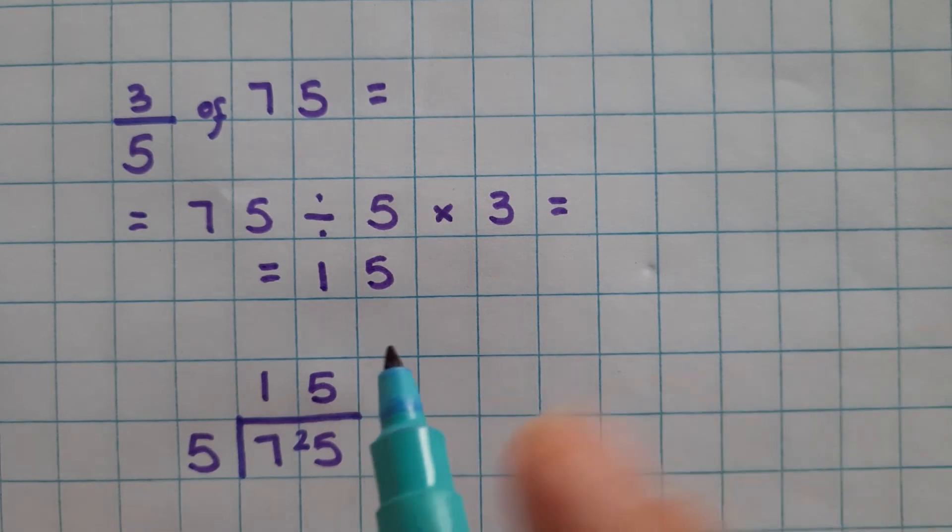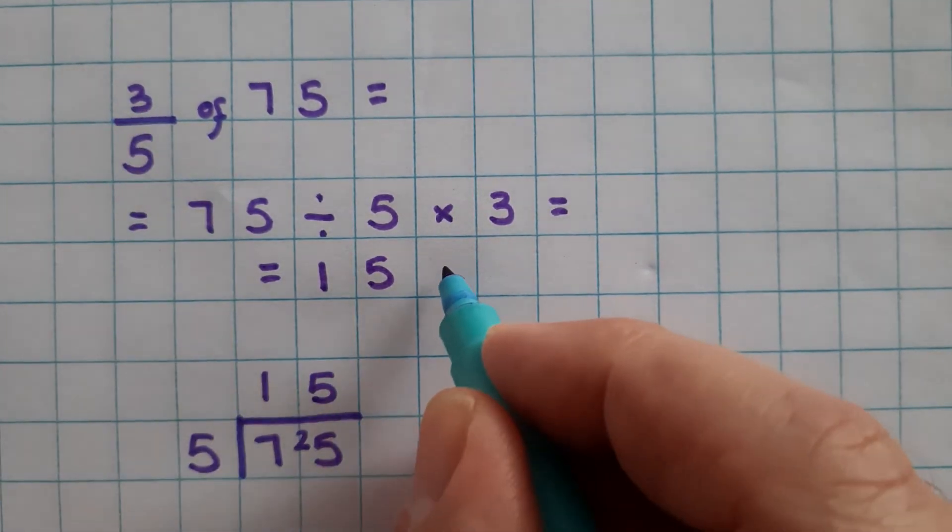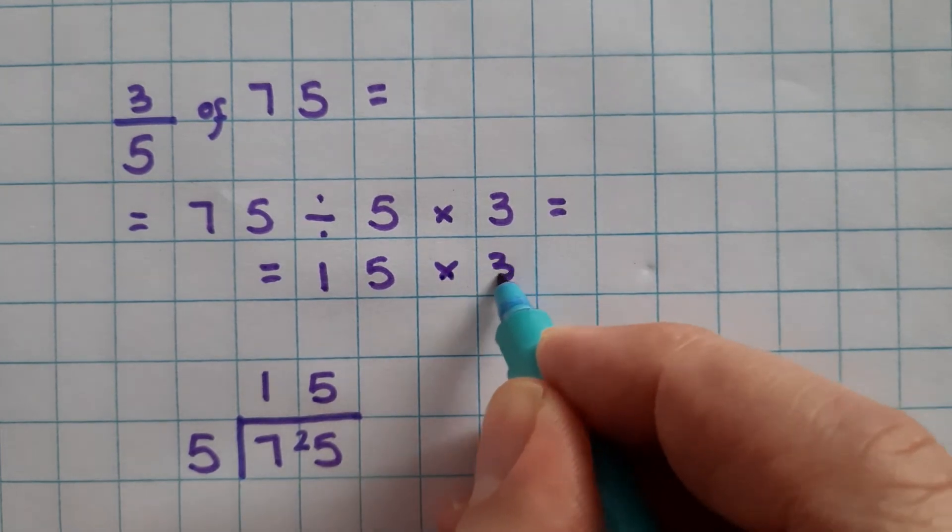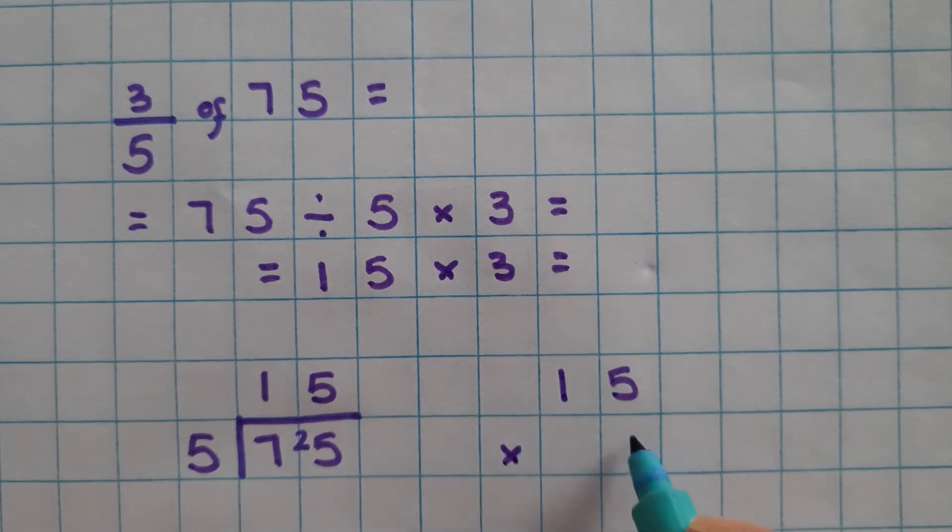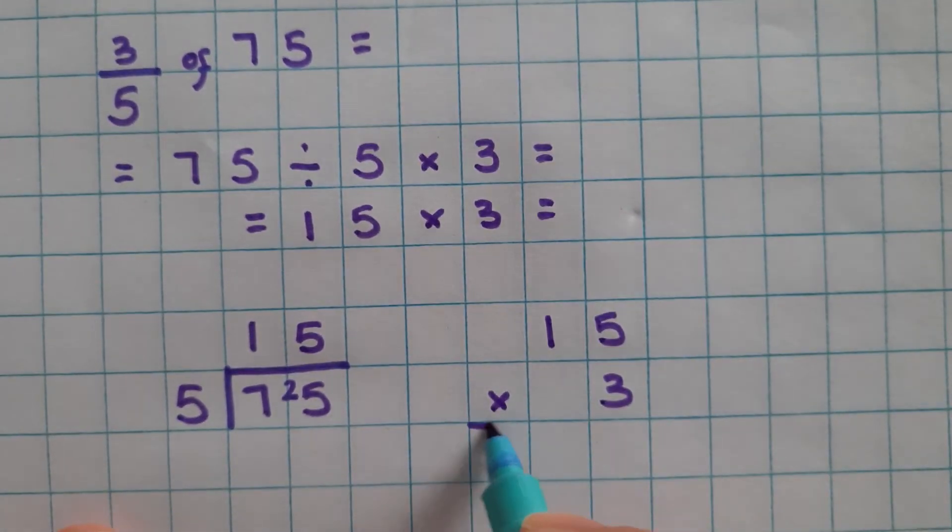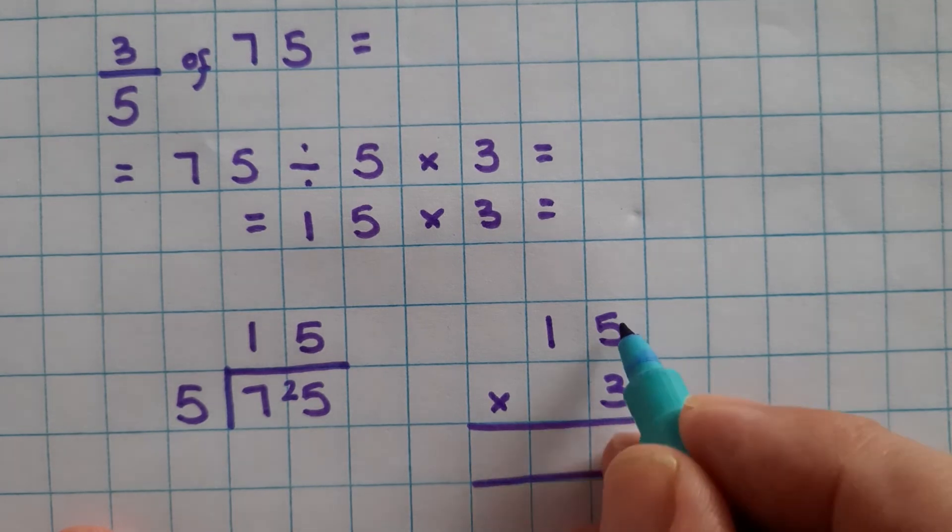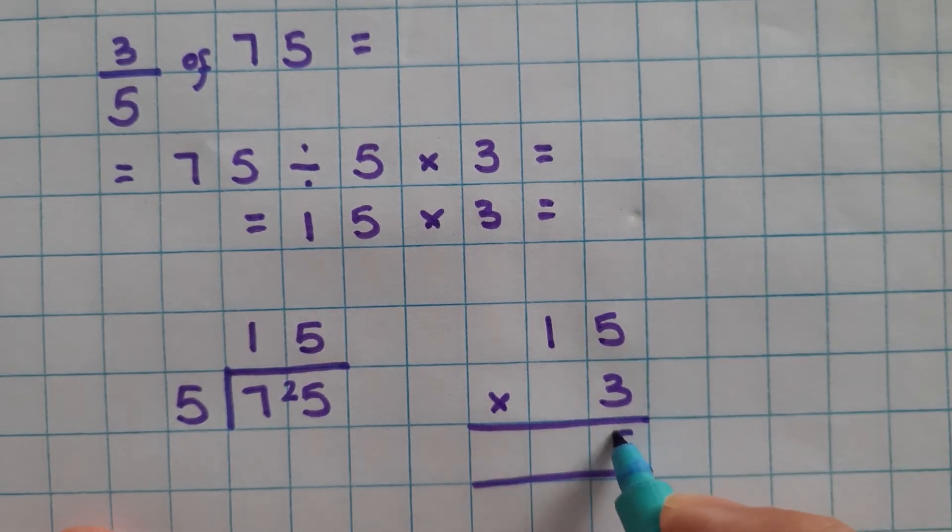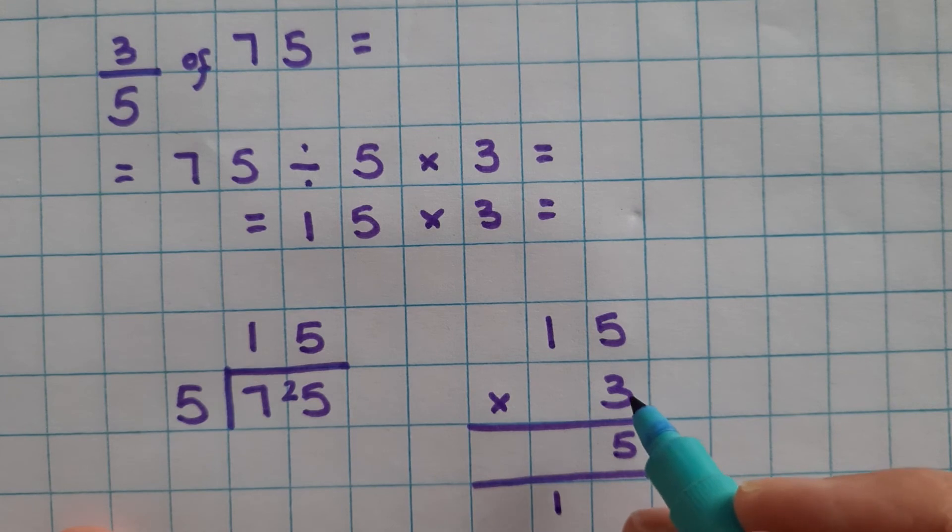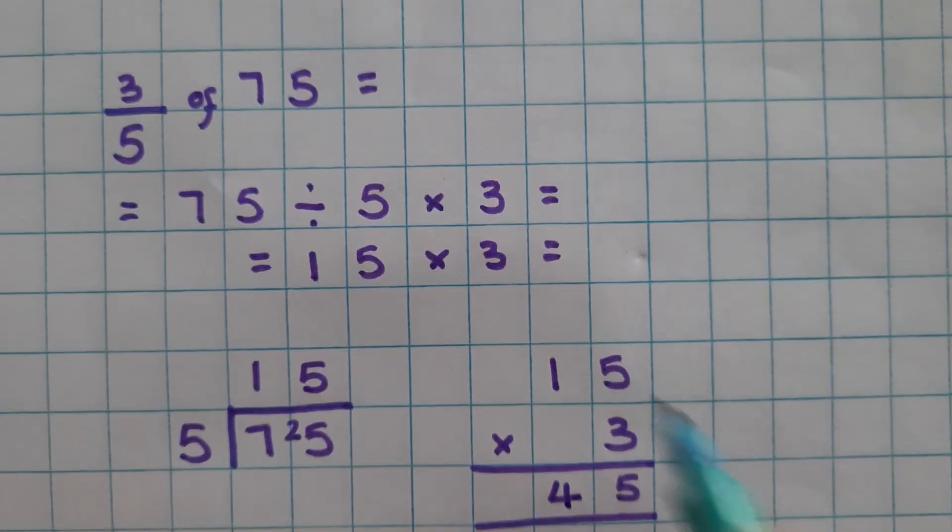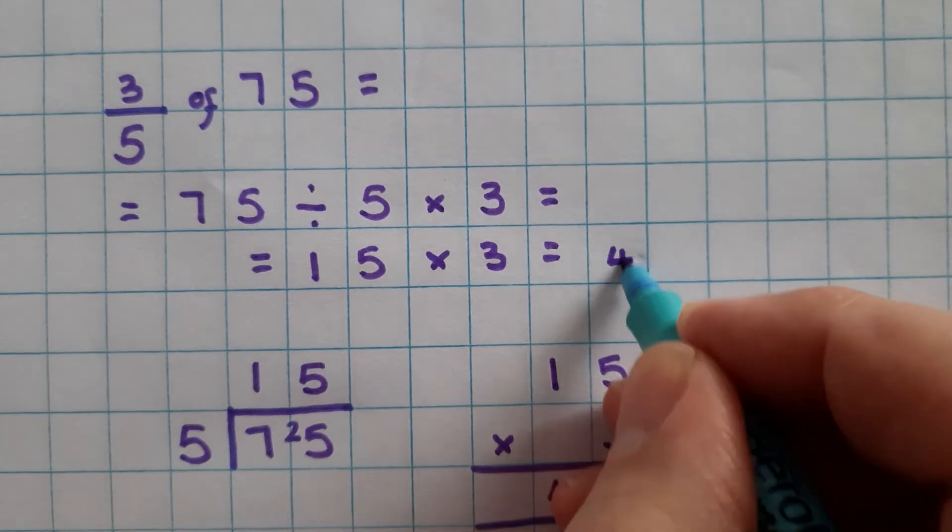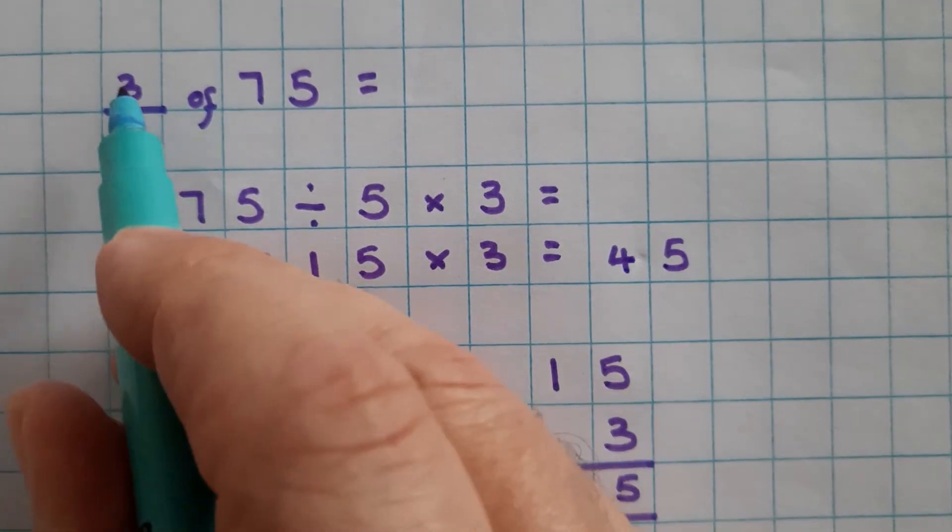That's found as 1 fifth. We need to find 3 fifths, so we multiply by 3. 15 multiplied by 3. 3 fives is 15. 5 in the 1s, carry the 10. 3 times 10 is 30, plus the 10 we carried is 40, or 4 tens. 15 times 3 is 45. So 3 fifths is 45.